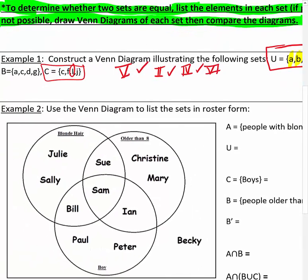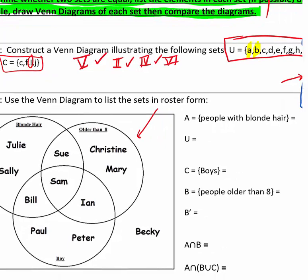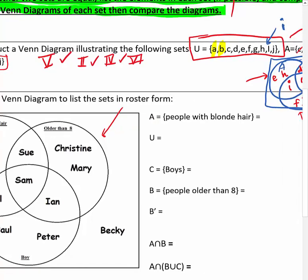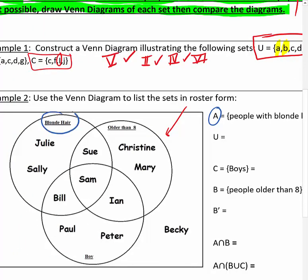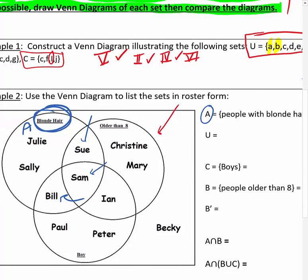Example two is a little different — they already have a Venn diagram filled in for us. They want us to use the Venn diagram to list the sets in roster form. Remember, roster form is where you take the curly brackets that represent a set and write out explicitly all the elements. First we have set A — the people with blonde hair. The circle labeled blonde hair is set A, and it includes anyone in that circle regardless of overlap. So set A is: Julie, Sally, Sue, Sam, and Bill.